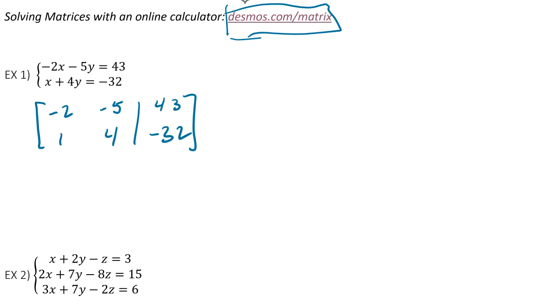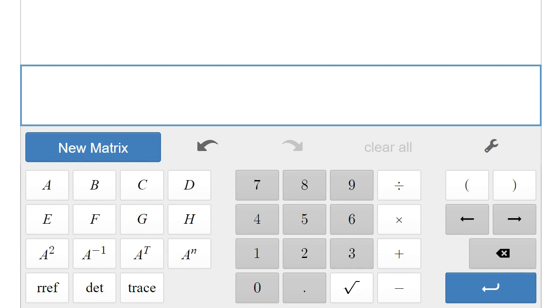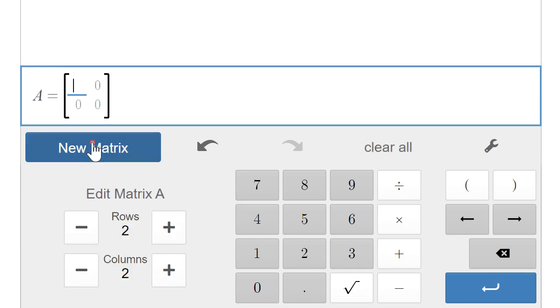Now we're already ready to solve. So we're going to go to this Desmos online calculator, and we're going to put in our matrix. So we go up to New Matrix, click that. Then we need to say how many rows and how many columns. So in our case it's two rows, three columns.